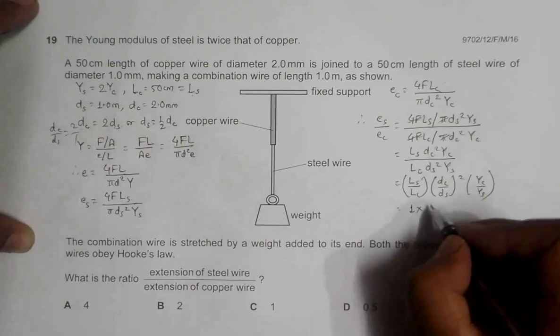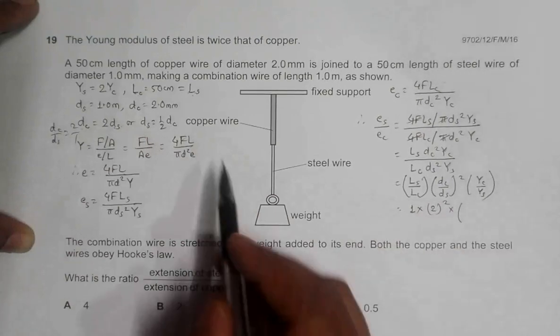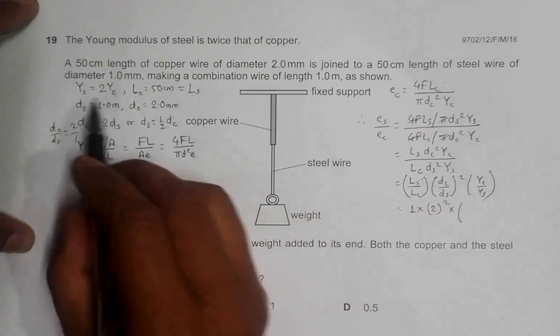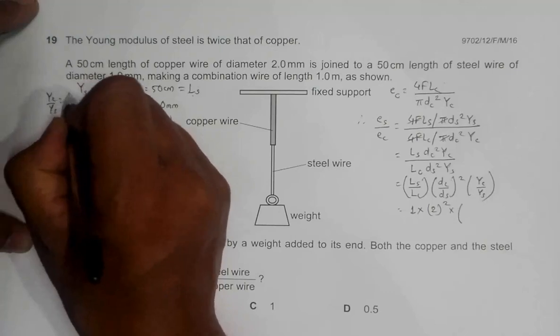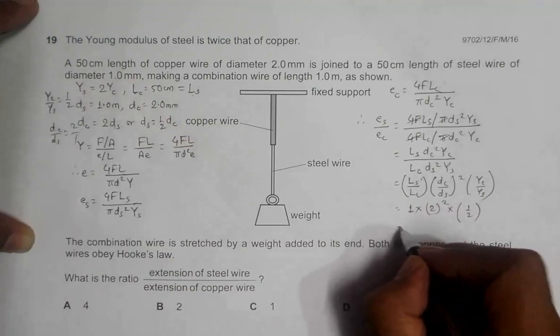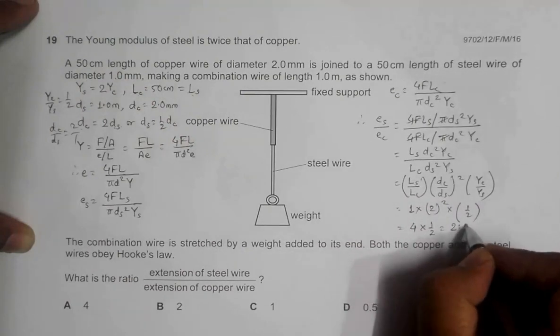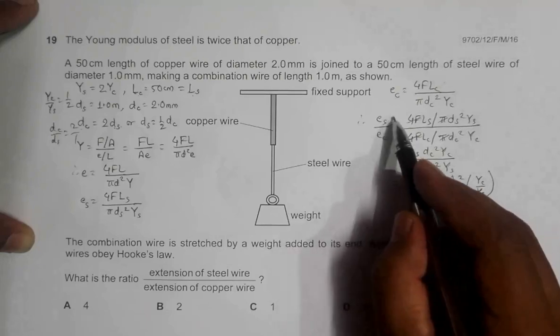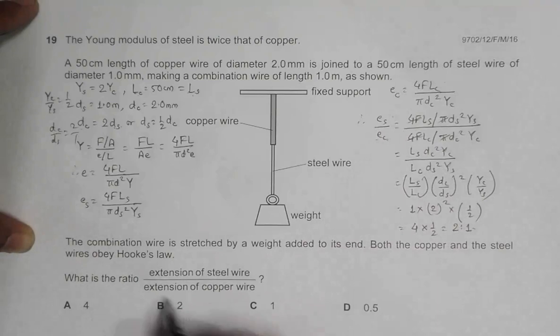So it should be 2 squared. Then we have Young's modulus of steel equal to twice YC, so YC by YS should be equal to 1 by 2. So the whole thing is equal to 4 times 1 by 2 equal to 2 is to 1. Extension in steel by copper is equal to 2 is to 1. If I go through the answer choices, then choice B is the correct choice.